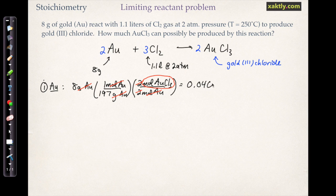And the unit we'll come out with is moles of gold 3 chloride. That's what we wanted, and if we do the calculation, we get 0.0406 moles of gold chloride. So what that says is if gold was the limiting reactant, the amount of gold chloride we would make is 0.046 moles. But we don't actually know that gold is a limiting reactant just yet.